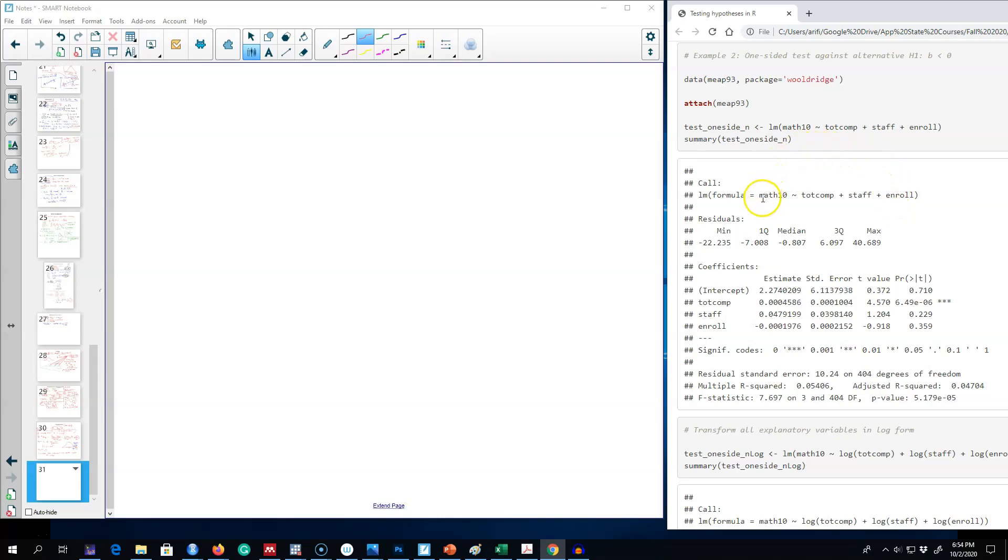This is our variable of interest: enrollment. Essentially, we want to know whether enrollment has any impact on the performance of students. Our null hypothesis here is that enrollment has no impact on performance, and our alternative hypothesis is that enrollment has negative impact on student performance. That is, as enrollment increases, student performance decreases as shown by math scores.